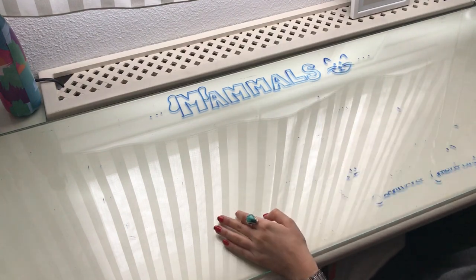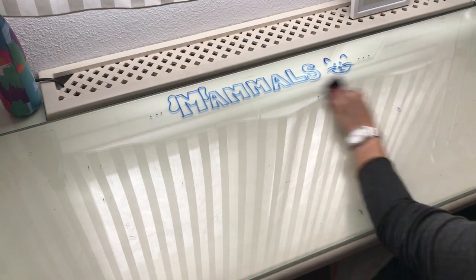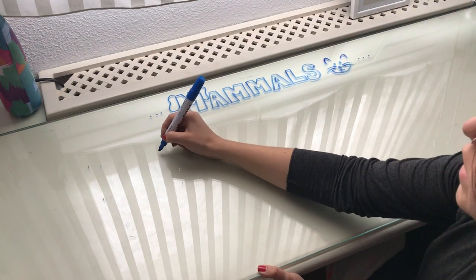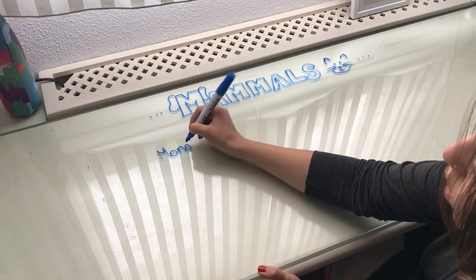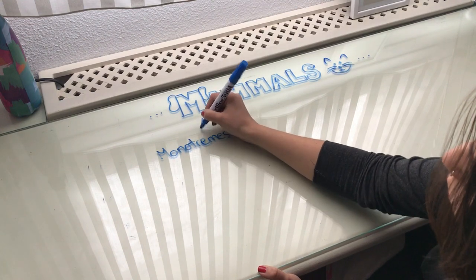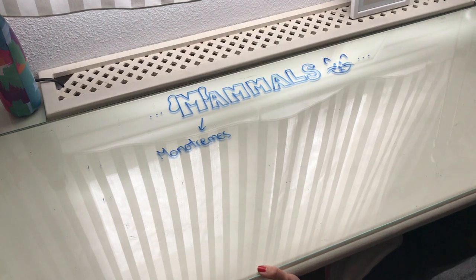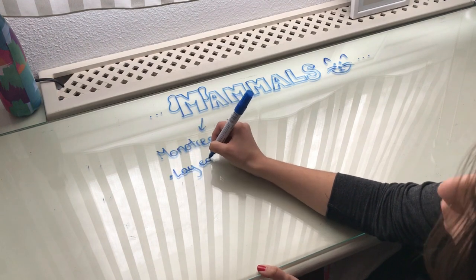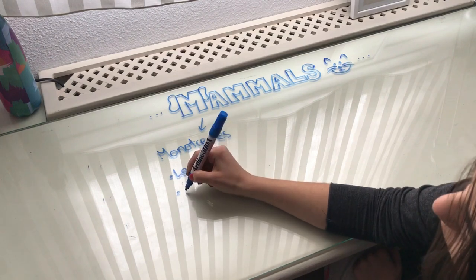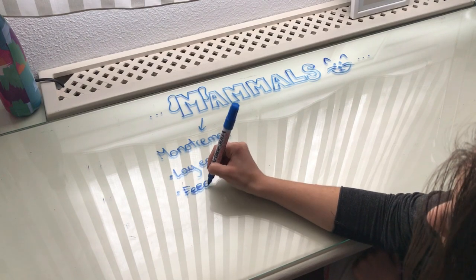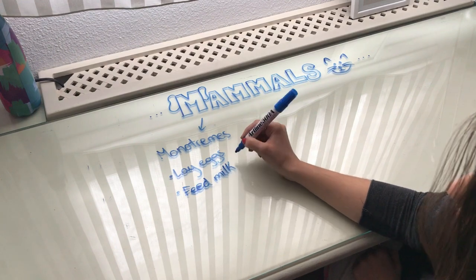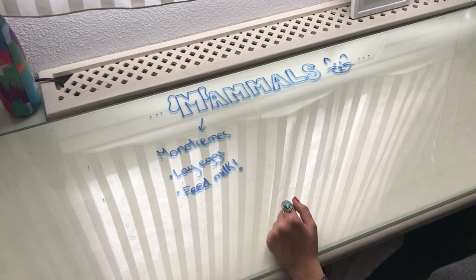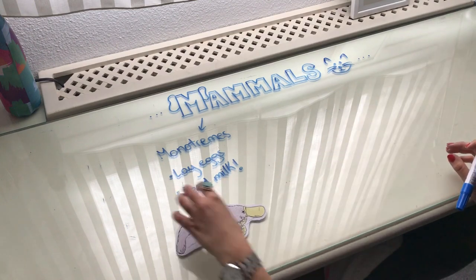The first group that we can find is called monotremes. Monotremes are the group of mammals where the animals lay eggs. However, always remember — be careful — they always feed milk to their babies. They feed milk to babies but they lay eggs. One example of this is the platypus.